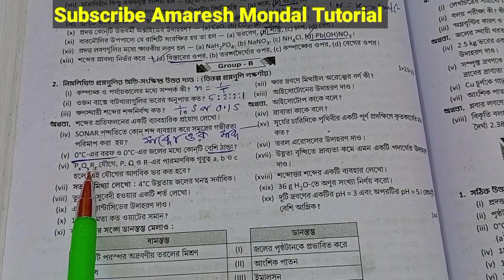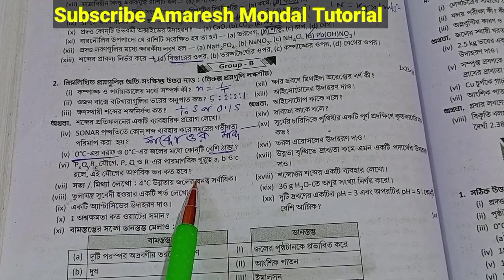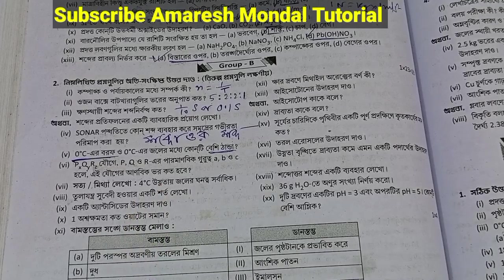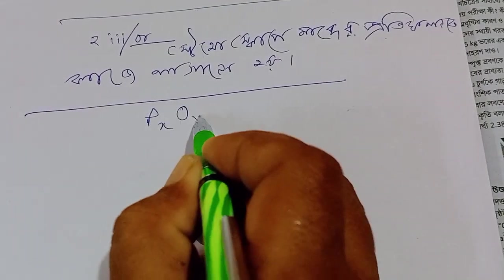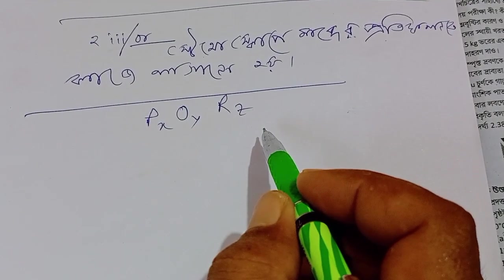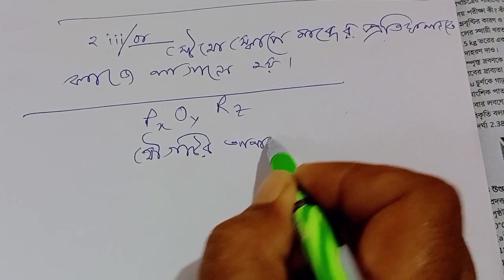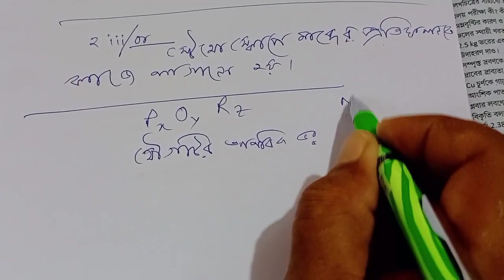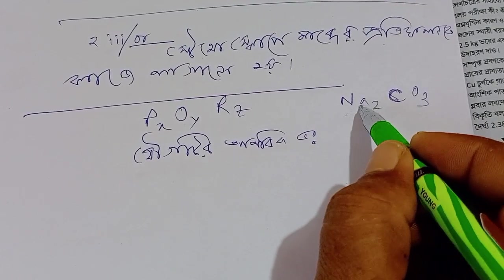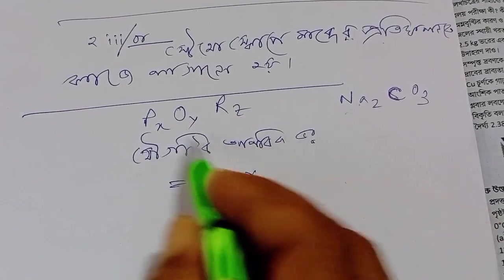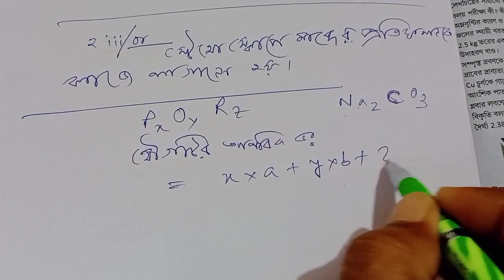P X O Y R Z, PQR — panic group to diagonal. A B C while atomic weight. Anuvik bhaar cotaho. P X O Y R Z called a quick ionic PQI. Sodium carbonate Na2CO3. Into phosphor PHA, Y into B and Z into C.